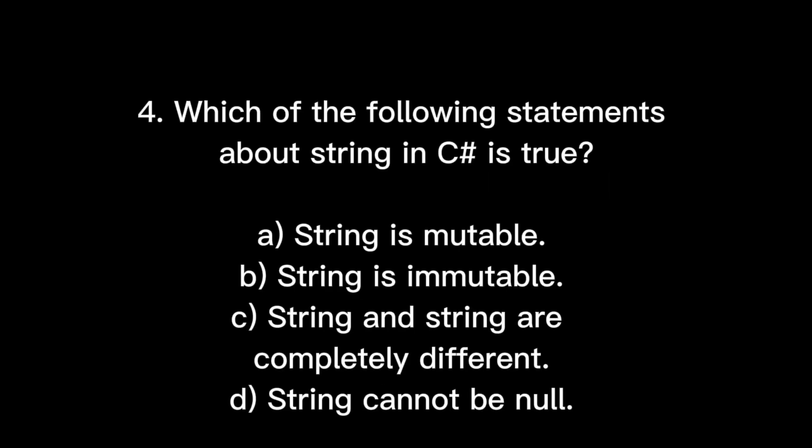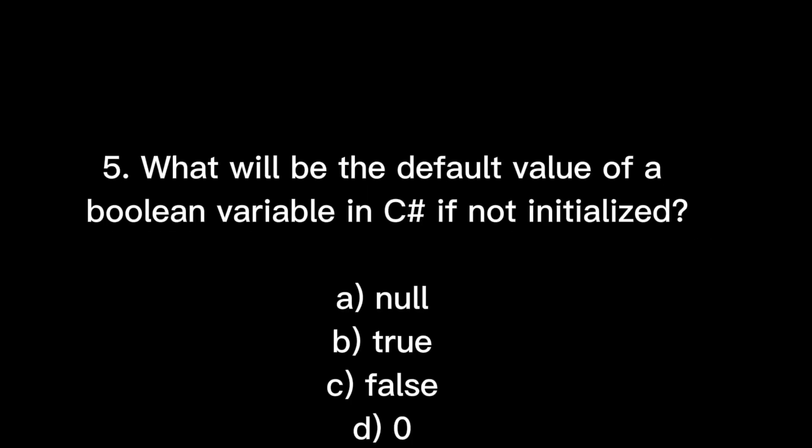Question: Which of the following statements about strings in C# is true? Option A says mutable — that is wrong. Strings are immutable in C#, so option B is correct. Also, 'string' and 'String' are not completely different (they are aliases), and a string can be null, so those other options are false. Only option B is true.